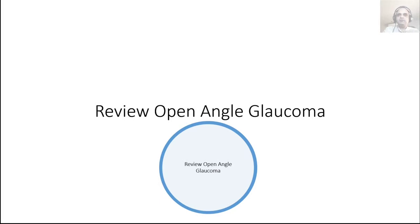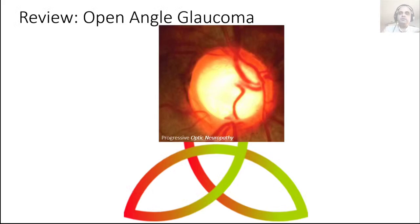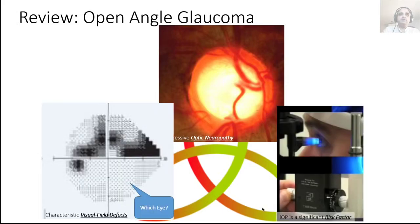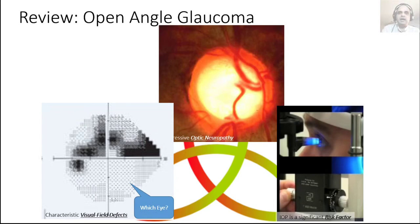We'll start by reviewing open angle glaucoma because the term glaucoma has a very specific meaning — it's not just high intraocular pressure or raised IOP. From our discussion on open angle, it was a triad: progressive optic neuropathy with characteristic visual field effects, in which intraocular pressure was a significant risk factor. It's a risk factor, not an etiologic factor, in all types of glaucoma.